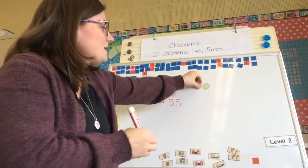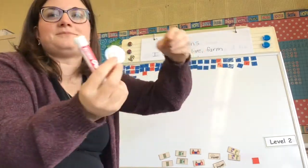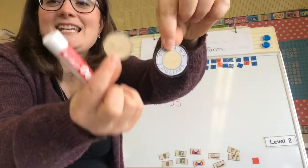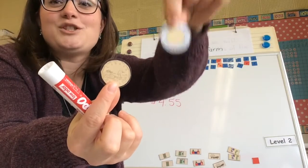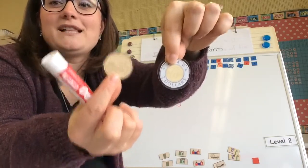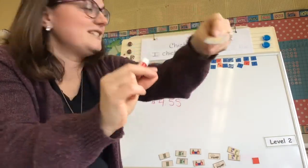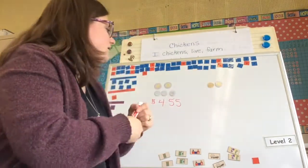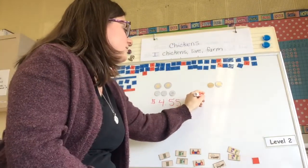Can you see how much money I have in the second group? A toonie and a loonie — so $2 plus $1 is $3. I have $3 in my next group.